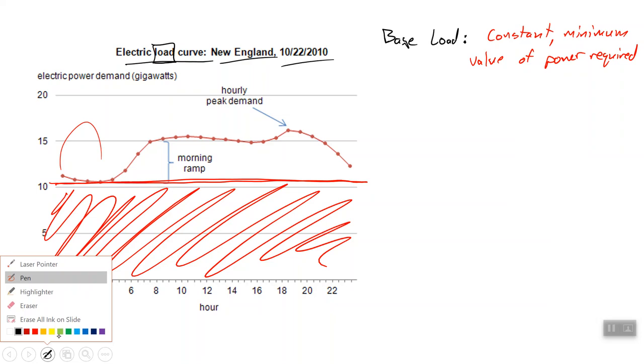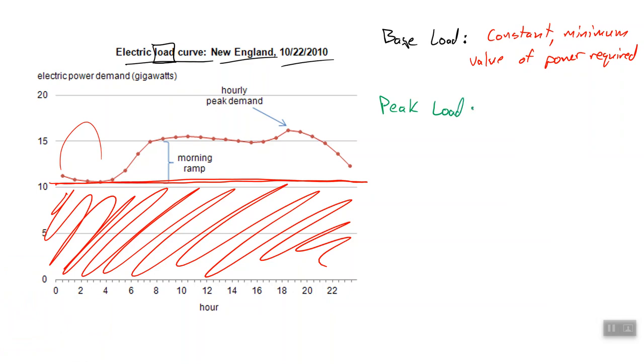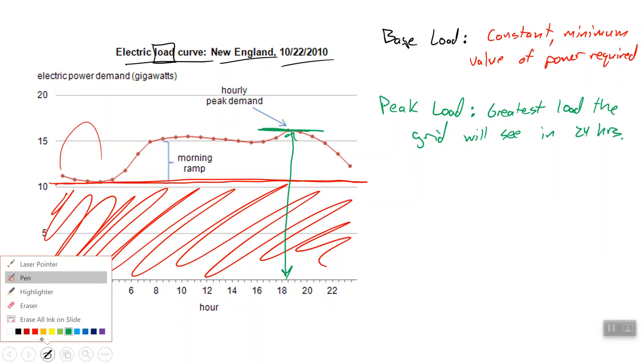Then let's look at some other loads. There is the peak load as shown right here. So the peak load is the greatest load that the grid will see in 24 hours.